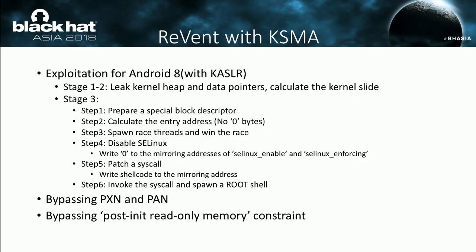Here are the exploitation steps for Android 8. At stages 1 and 2, leak kernel heap and data pointers, calculating the kernel slide as mentioned previously. At stage 3, first prepare a space for the kernel block descriptor and calculate the associated entry address. Then spawn race threads. After winning the race, disable SELinux and patch a syscall from user mode. Finally, invoke the patched syscall and spawn a root shell. With this KSMA exploitation technique, there is no ROP or JOP chain used, and both PXN and PAN mitigations are fully bypassed. Also, the post-init read-only memory constraint can also be bypassed.